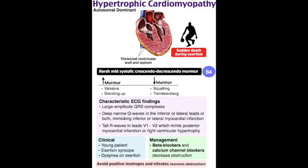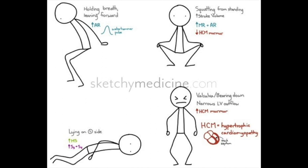Physical exam: harsh systolic murmur heard best at the left sternal border. The murmur increases with decreased venous return (Valsalva, standing) or decreased afterload (amyl nitrate). Valsalva blocks IVC/SVC return; standing causes blood to pool in lower extremities; afterload reducers allow easier LV outflow, leaving less blood in the ventricle. The murmur decreases with increased venous return (squatting, supine, leg raise) or increased afterload (hand grip).